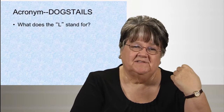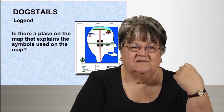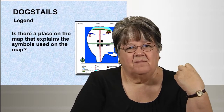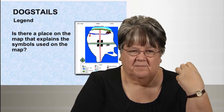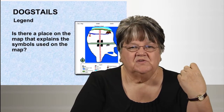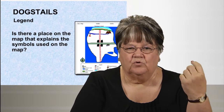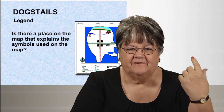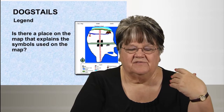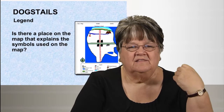The L stands for legend. Is there a place on the map that explains the symbols? In the PowerPoint slide example, you can see a bunch of symbols in the legend — there's a gorilla, there's a cave — and they are all identified in the legend.